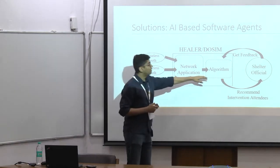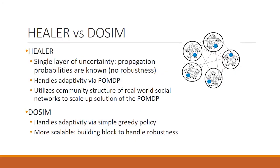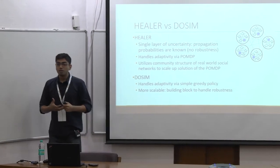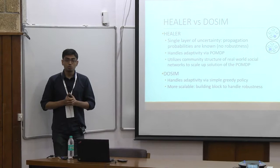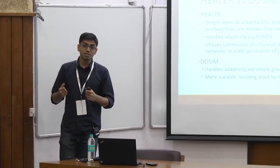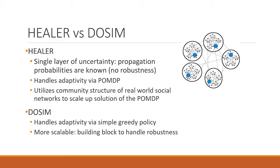For this algorithm, we developed two different kinds: Healer and Dosim. Healer was the first algorithm we developed. It casts the entire problem as a partially observable Markov decision process, or POMDP. To scale up the POMDP solution, it relies on the fact that real-world social networks have a lot of community structure, utilizing this to partition the network into different communities and solving an independent POMDP on each community. Dosim handles adaptivity via a simple greedy policy and solves a more general problem. While Healer requires propagation probabilities as input, Dosim only needs a range over which these probabilities lie.